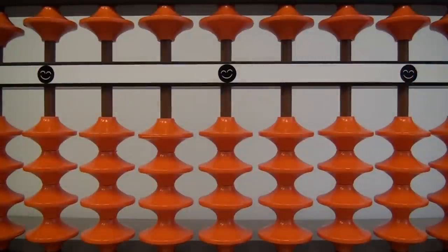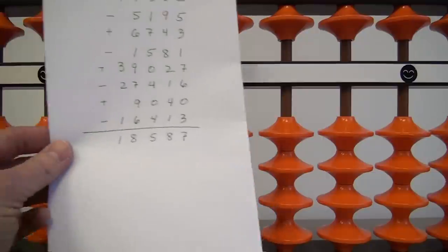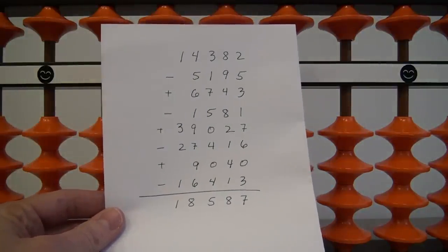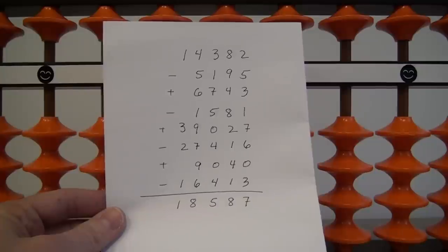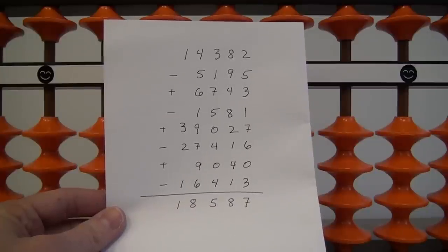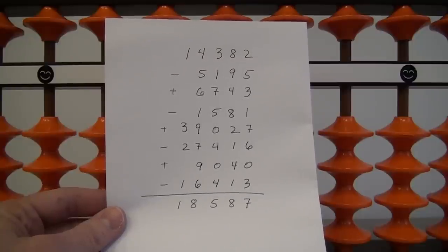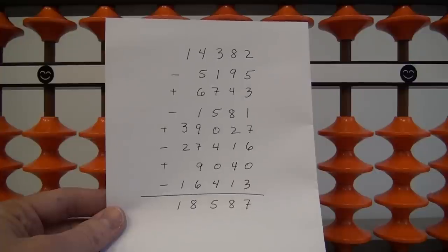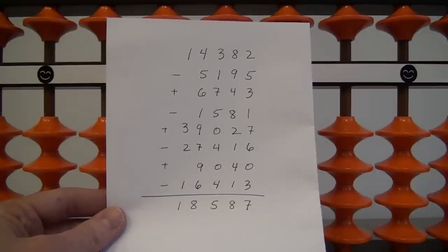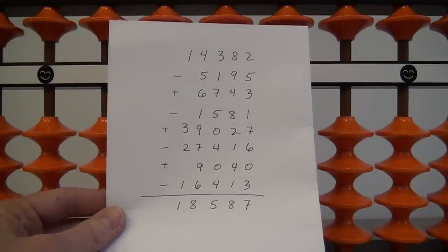What I want to do right now is show you an example of adding and subtracting a bunch of numbers. I'm going to alternate adding and subtracting. So here's the example: I'll start with 14,382, subtract 5,195, add 6,743, subtract 1,581, add 39,027, subtract 27,416, add 9,040, subtract 16,413.